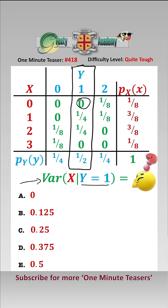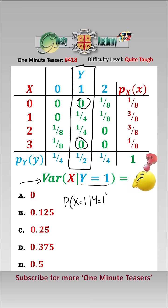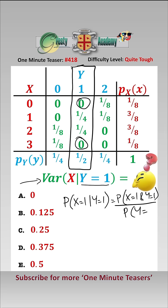The probability that x equals 3, given that y equals 1, is also 0. For the probability that x equals 1, we will use the formula: the probability that x equals 1 given y equals 1 is the probability that x equals 1 and y equals 1, over the probability that y equals 1, which equals a quarter over a half. So the probability x equals 1 given y equals 1 is a half.